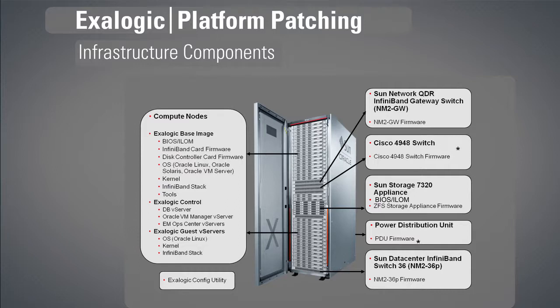This is one of my favorite slides — it provides an overview of all the components that make up an Exilogic machine: the IB switches, the Cisco switch, the Sun storage appliance, the PDUs, the spine switch, the compute nodes and their subcomponents. All of these need to be patched at some point. Each component has its own patching mechanism — patching the Sun switch one way, the IB switch another, the Cisco switch yet another way — it's complex. So we took this complex problem and created ExaPatch, our Exilogic patching CLI utility, covering all patchable components of Exilogic.